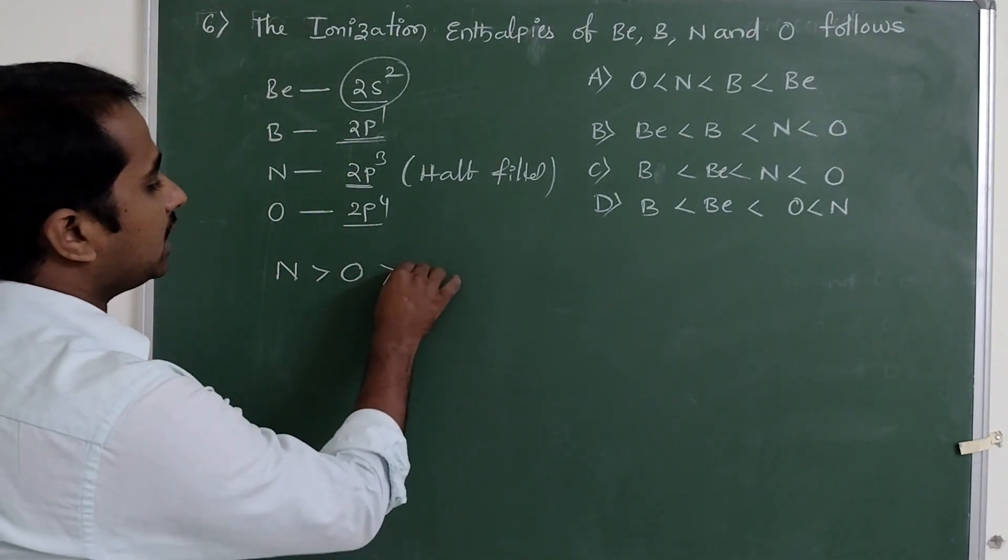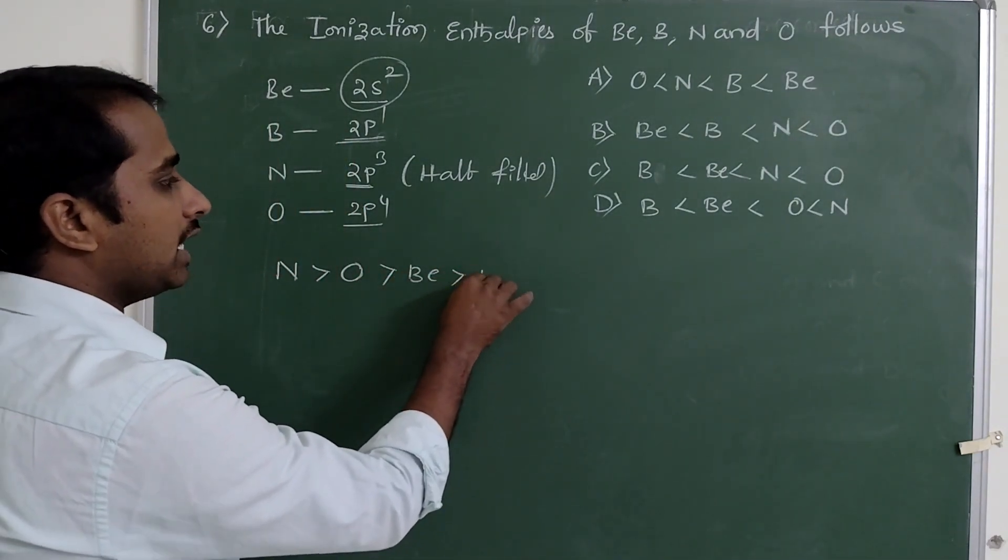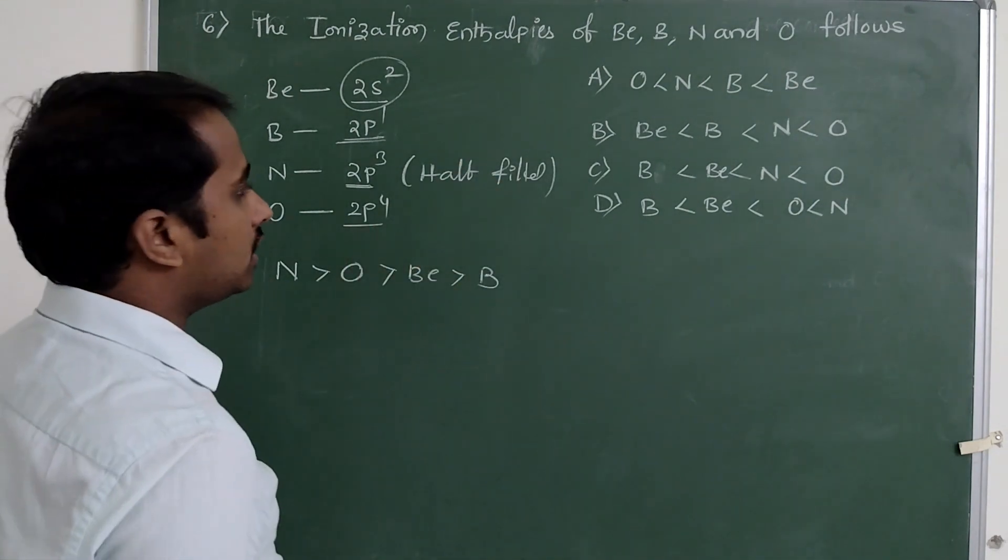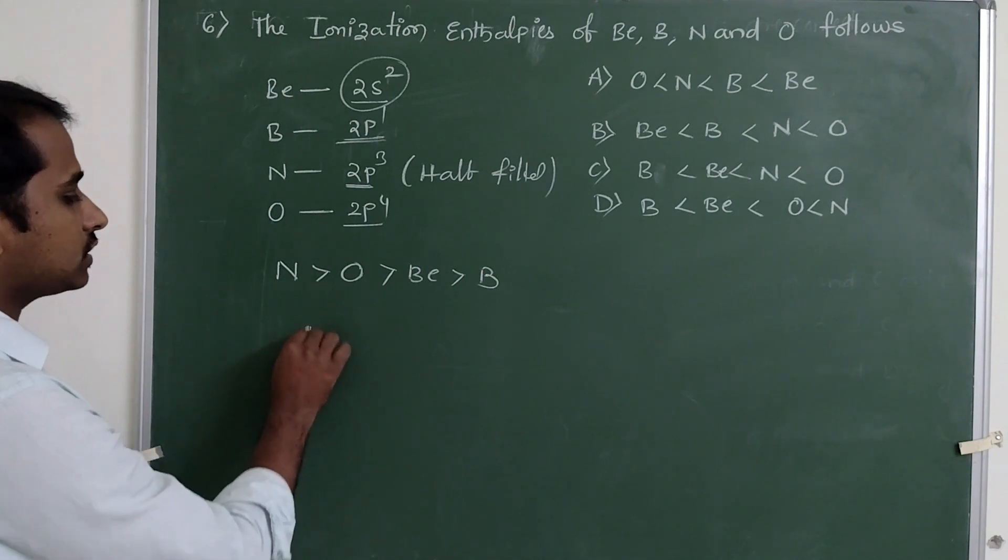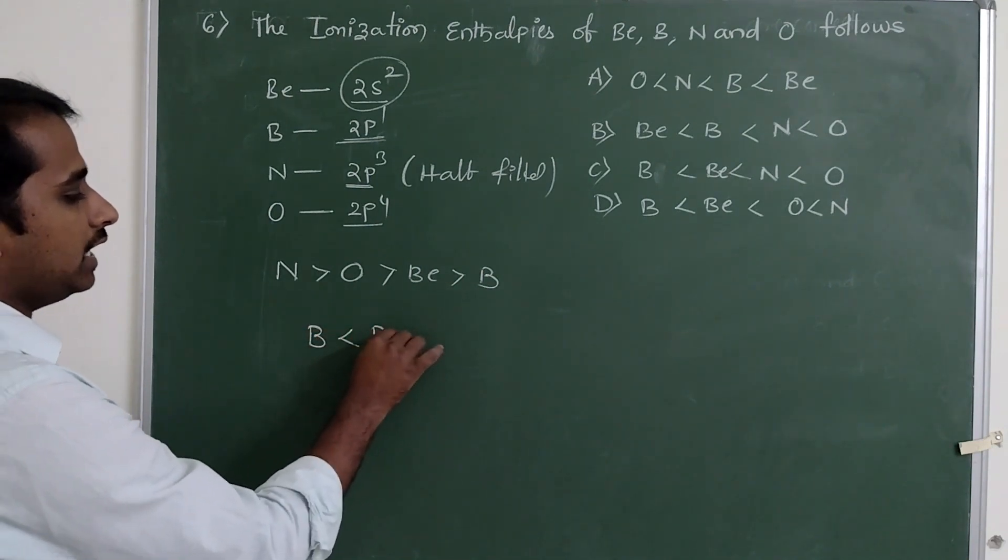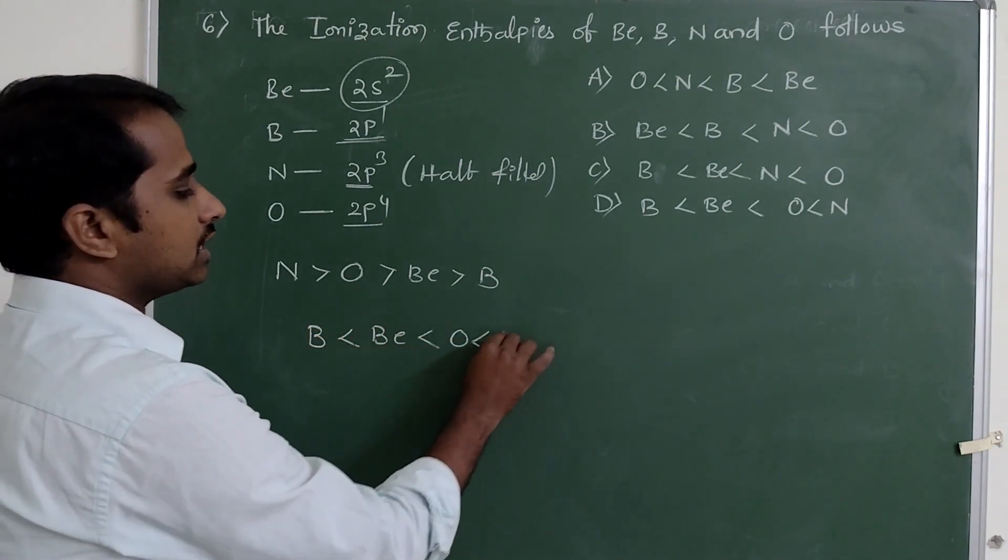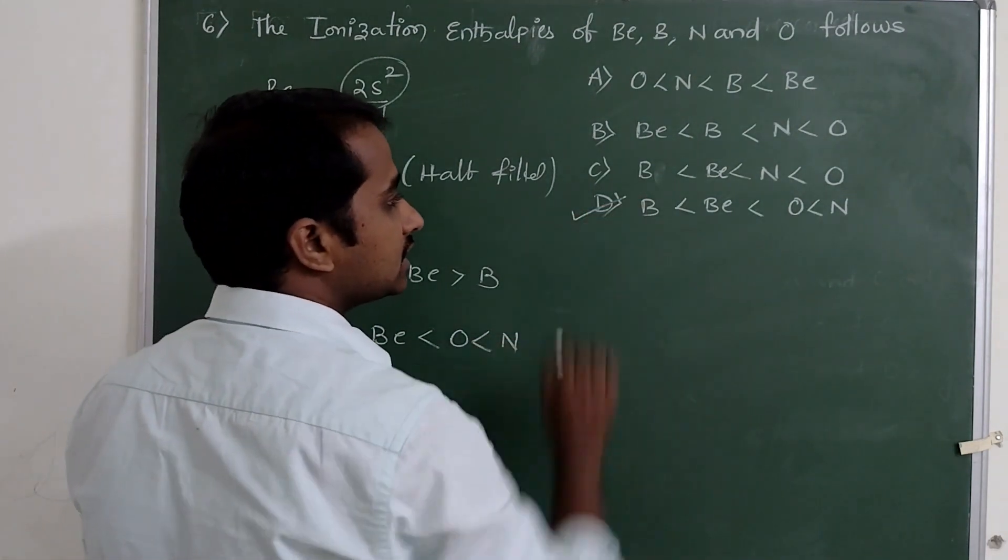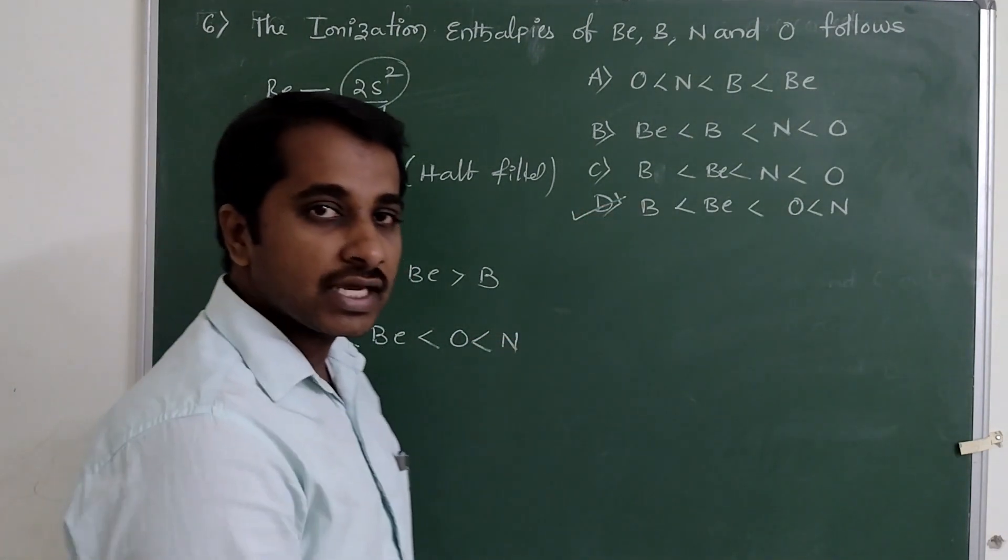So the correct increasing order of enthalpy is boron, then oxygen, then beryllium, then nitrogen. Answer D is correct. Thanks for watching.